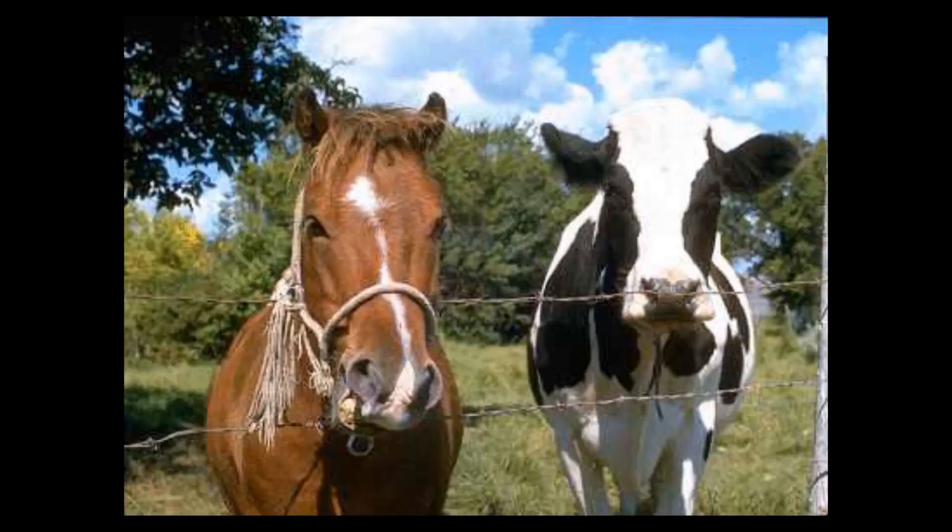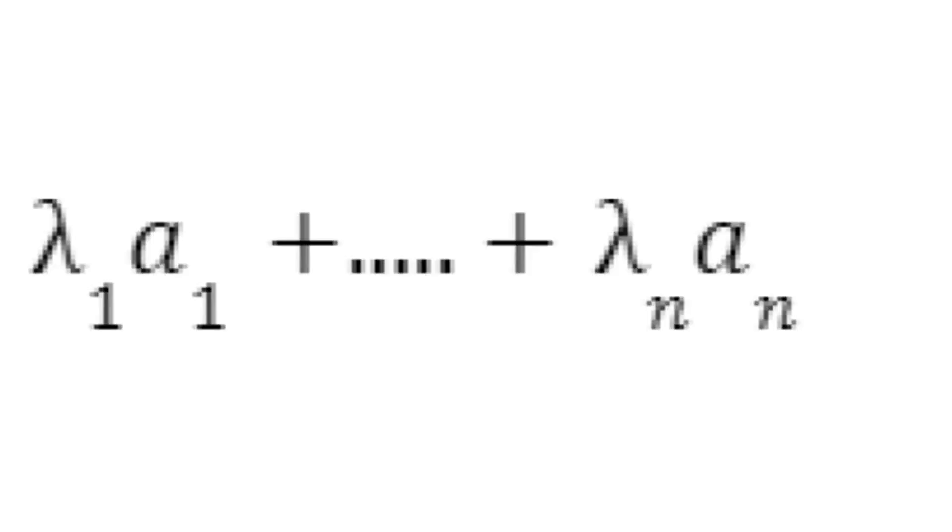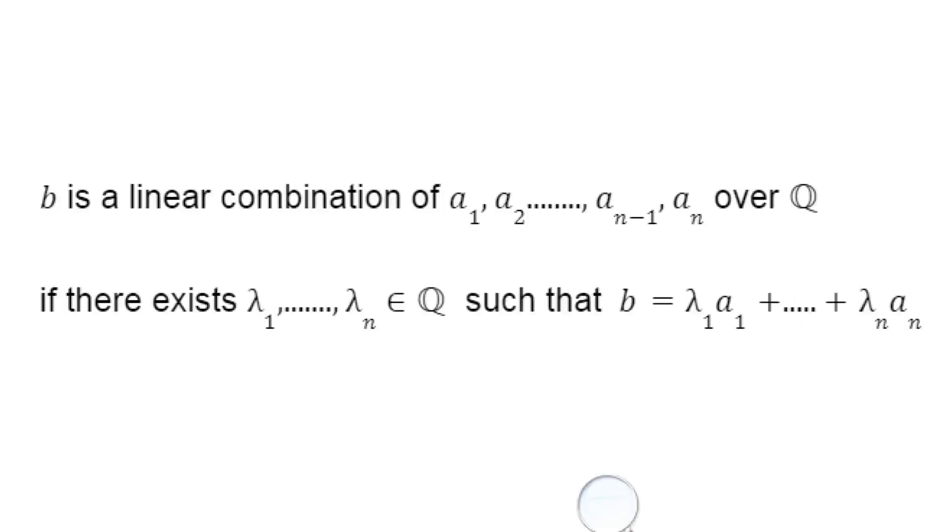By the way, a linear combination is this sort of sum where you can put coefficients in front. More precisely, we say that b is a linear combination of a1 to an over Q if there exists coefficients in Q such that you can write b in the following way.